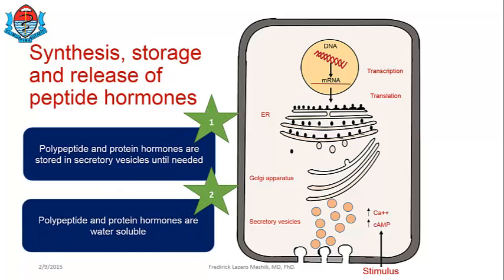Two main take-home messages: First, polypeptide and protein hormones are stored in secretory vesicles until needed — because they are water-soluble, they cannot escape through the plasma membrane, and they require a stimulus for exocytosis. Second, polypeptide and protein hormones are water-soluble — they can circulate freely in plasma without a protein carrier, but because they circulate freely, they can easily be cleared from plasma and therefore usually have shorter half-lives. Understanding the chemical nature of hormones tells a lot about specific individual hormones.